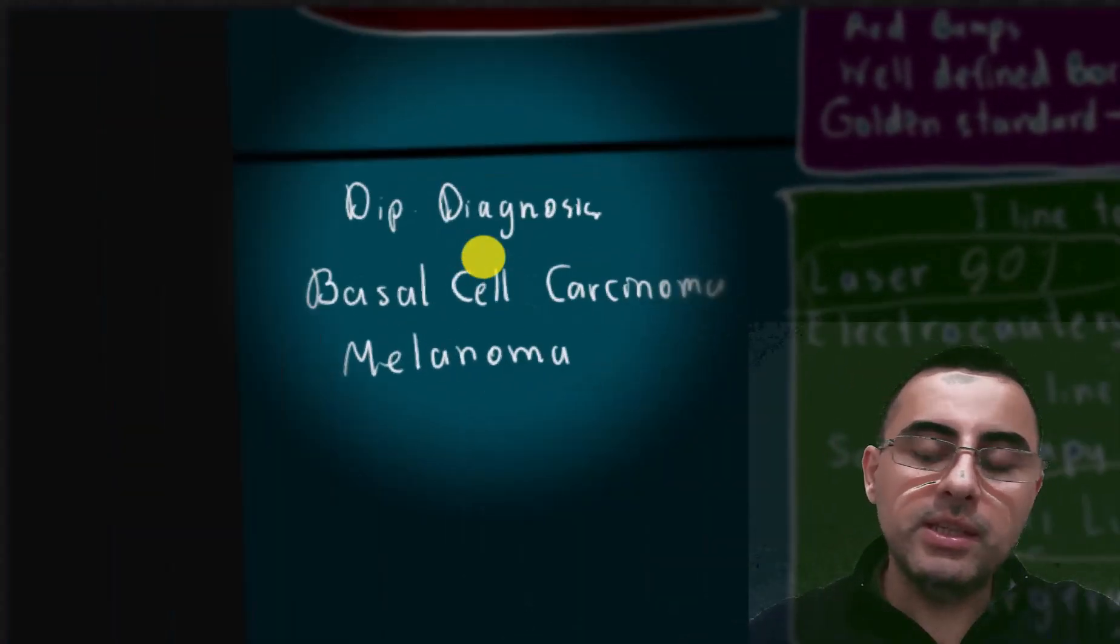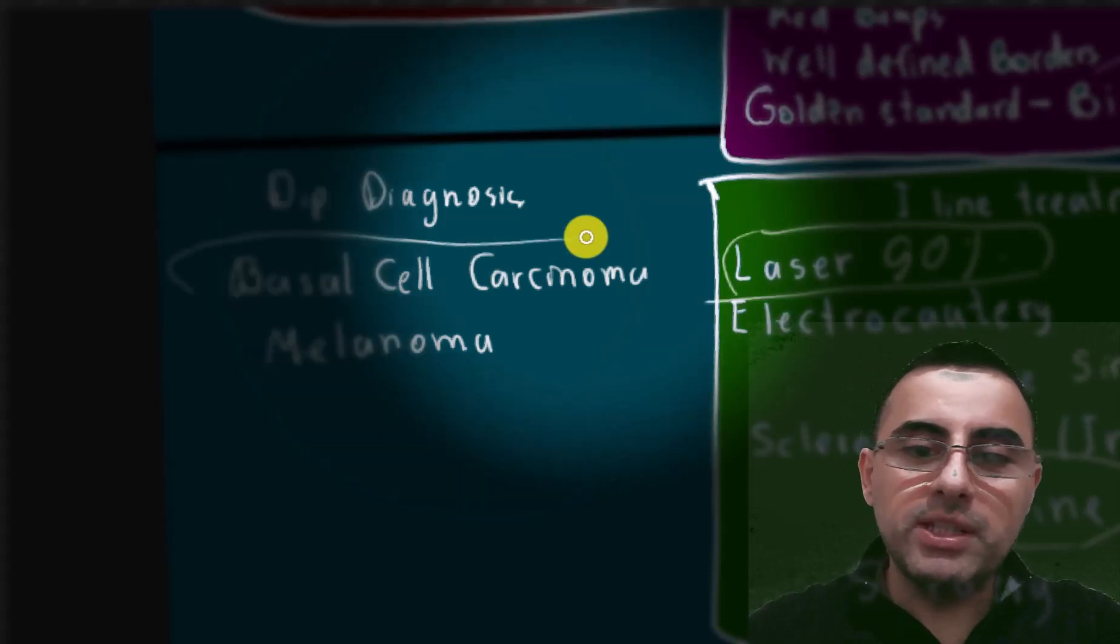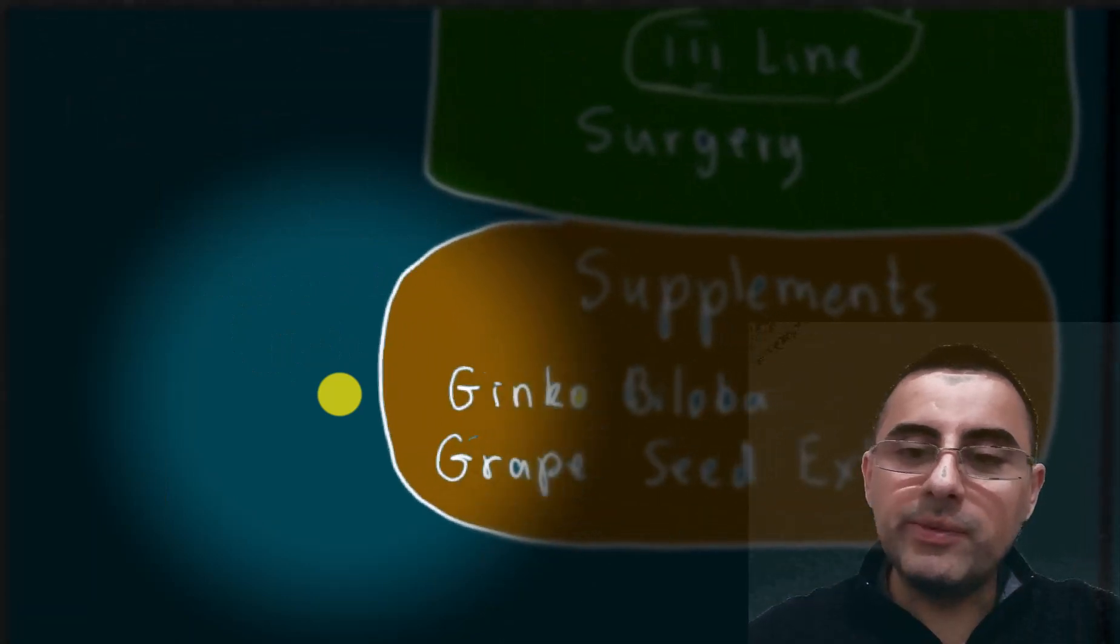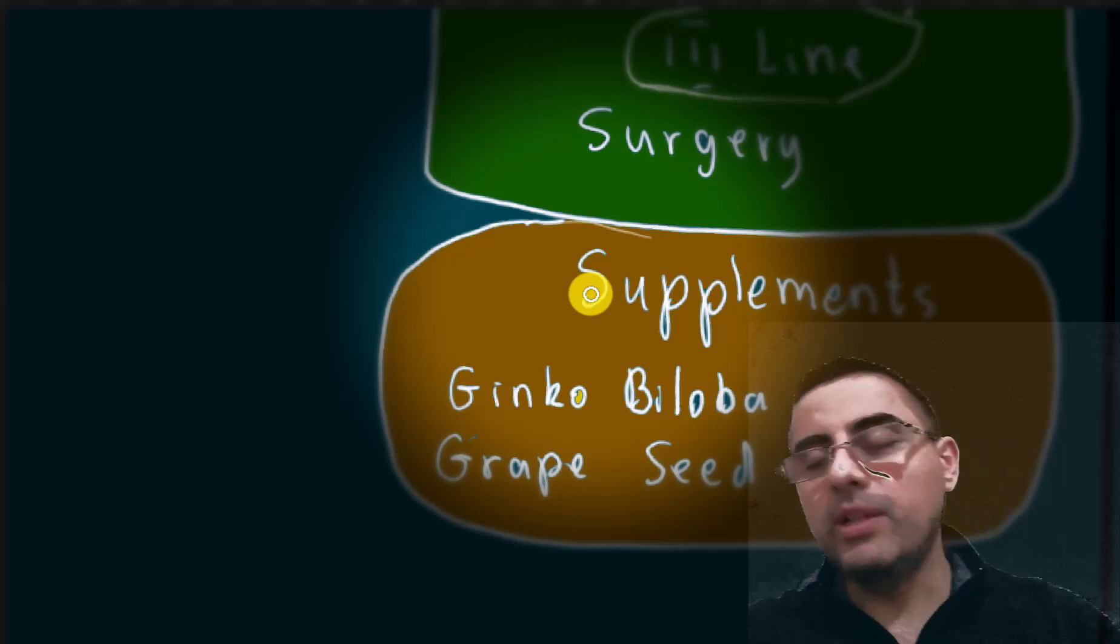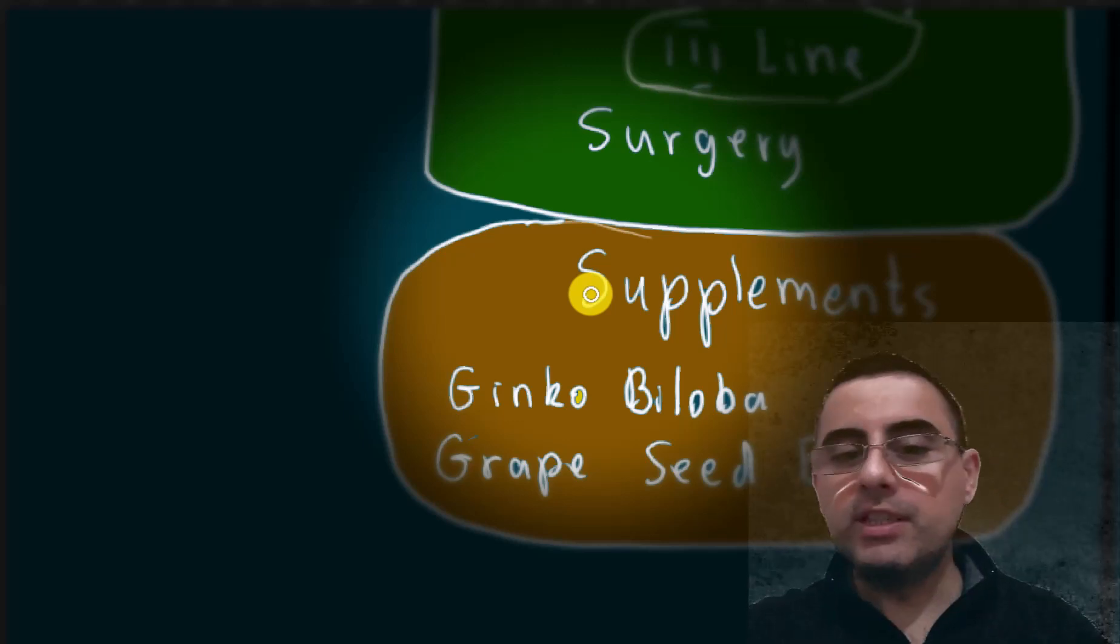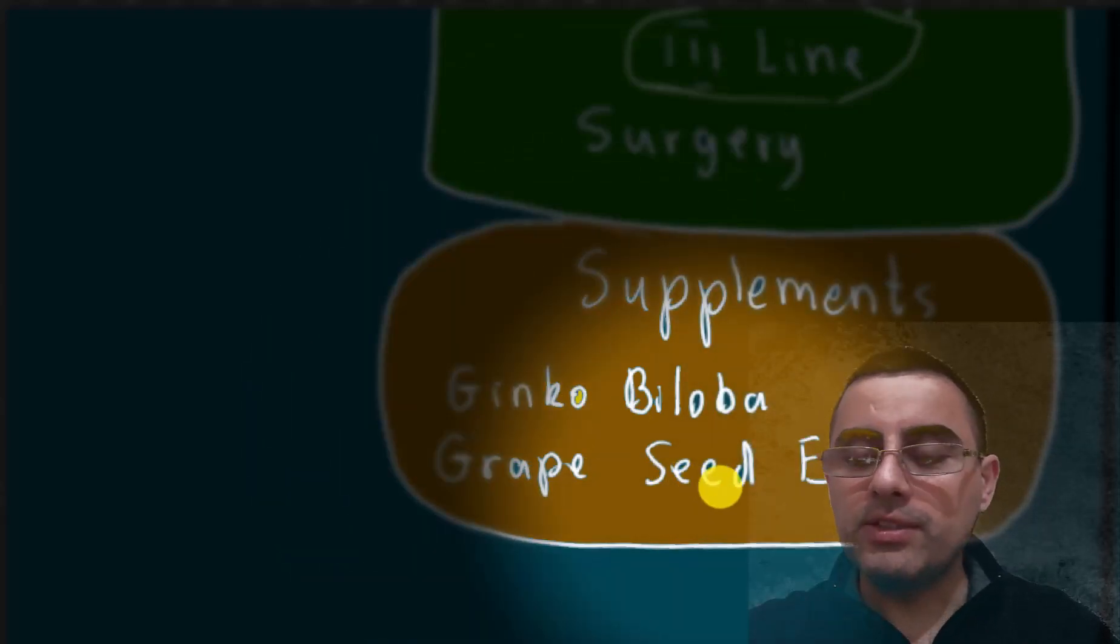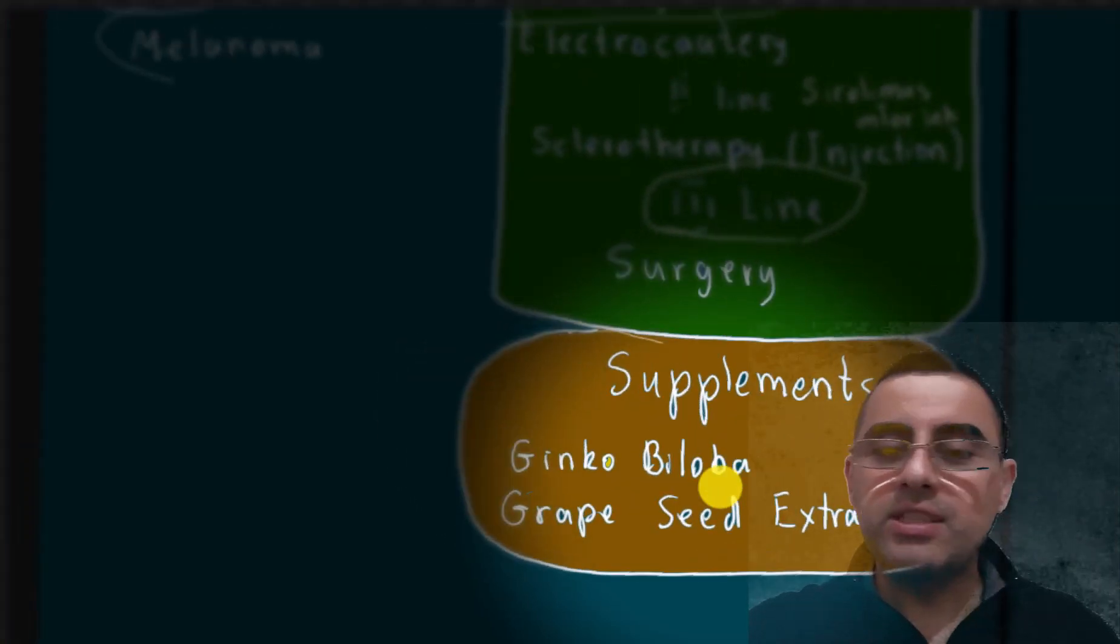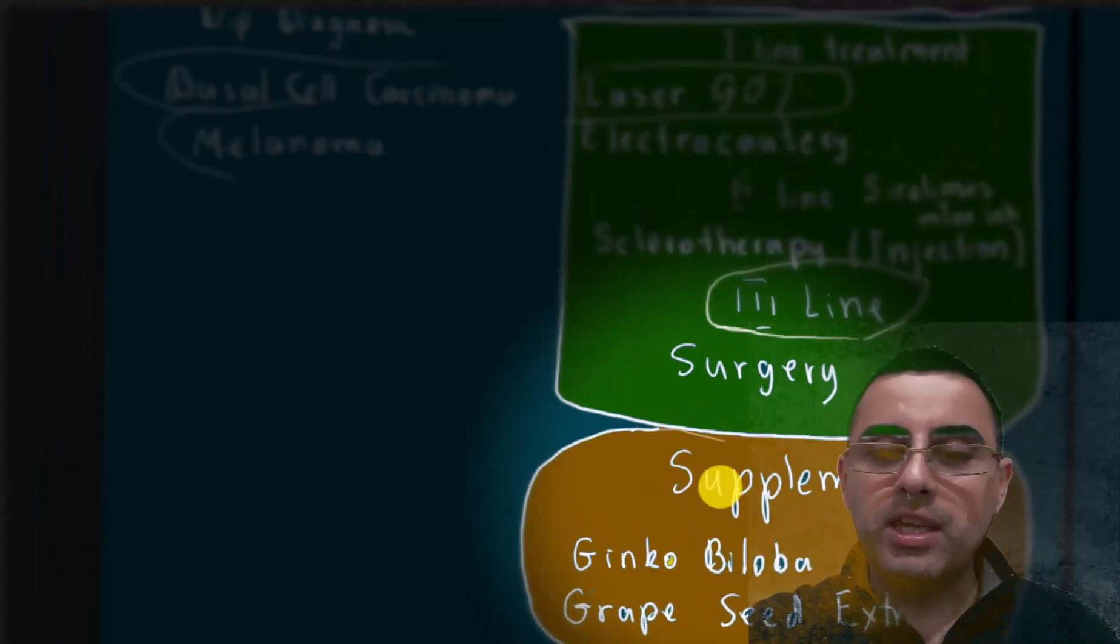For differential diagnosis, we should consider basal cell carcinoma and melanoma. Regarding supplements, supplement usage is not well-studied and the effectiveness is under question mark. But ginkgo biloba and grapeseed extracts are used as supplements to reduce angioma size, though the effectiveness is uncertain.